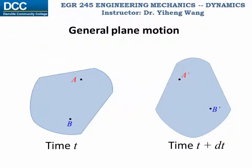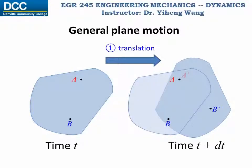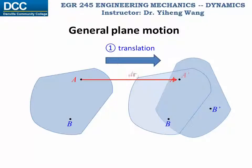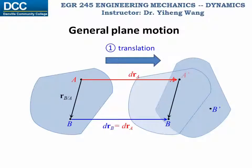Since general plane motion is the combination of translation and rotation, we can assume this motion happens in two steps. The first step is translation, during which point A has moved to its new location. During translation, the displacement for all particles in this rigid body are all the same. Therefore, the displacement of point B is the same as the displacement of point A during this first step, and the relative position of point B relative to point A stays the same as well.